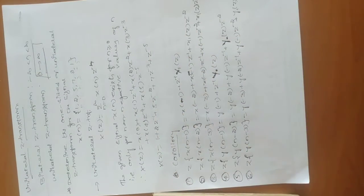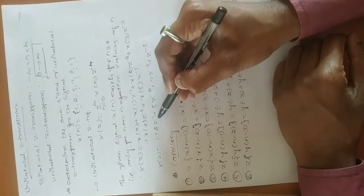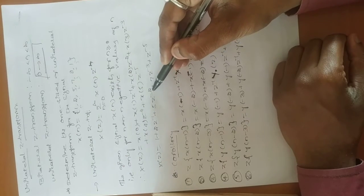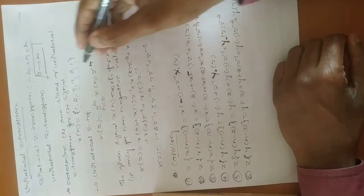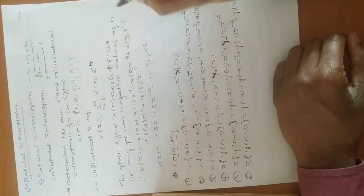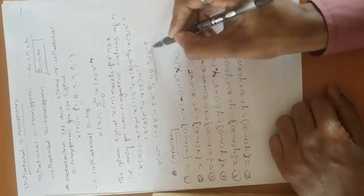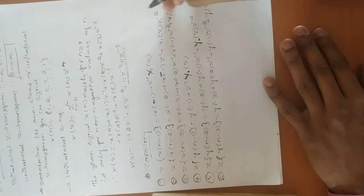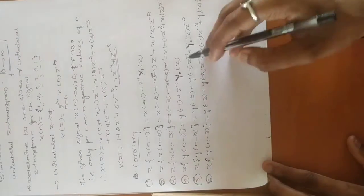Substituting the given sample values: x(0)=1, x(1)=2, x(2)=5, x(3)=7, x(4)=0, x(5)=1. So X(z) = 1 + 2z⁻¹ + 5z⁻² + 7z⁻³ + 0·z⁻⁴ + z⁻⁵. The zero term becomes 0. There are six corollaries for solving unilateral Z-transform problems — make note of them as they are very important.